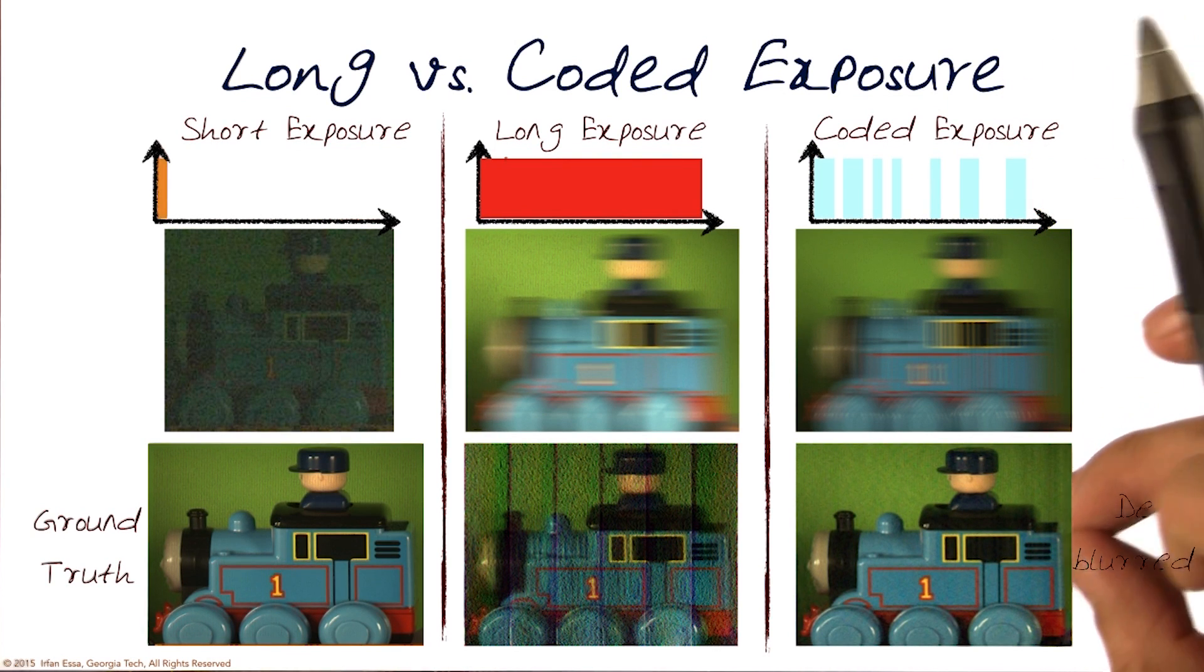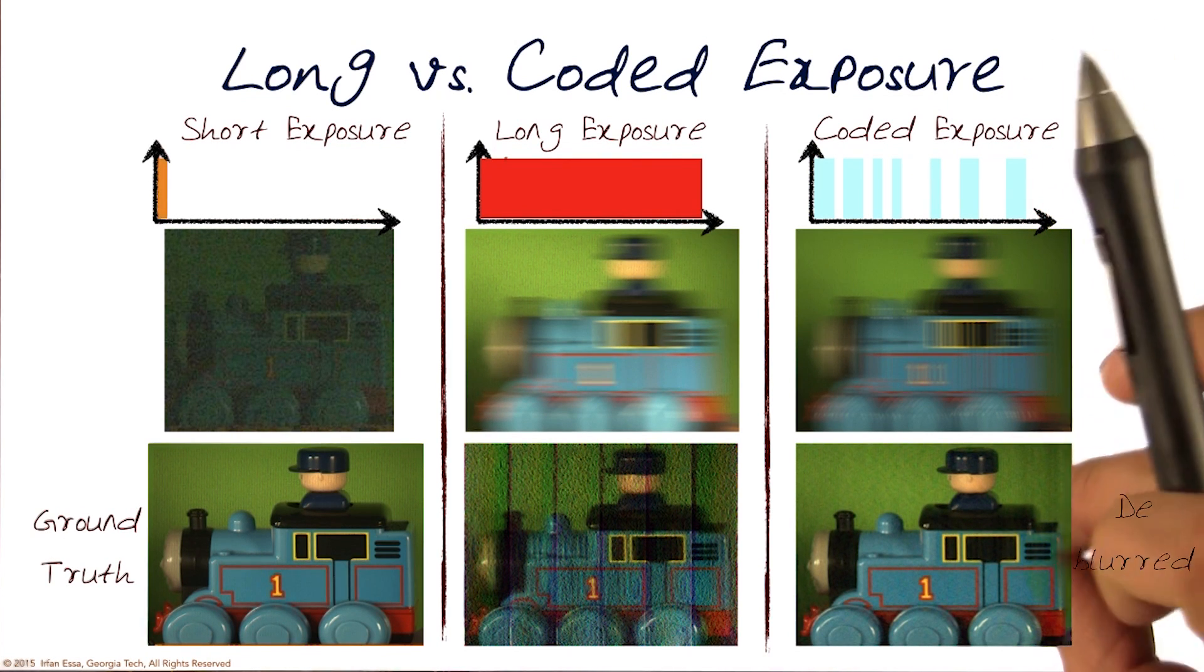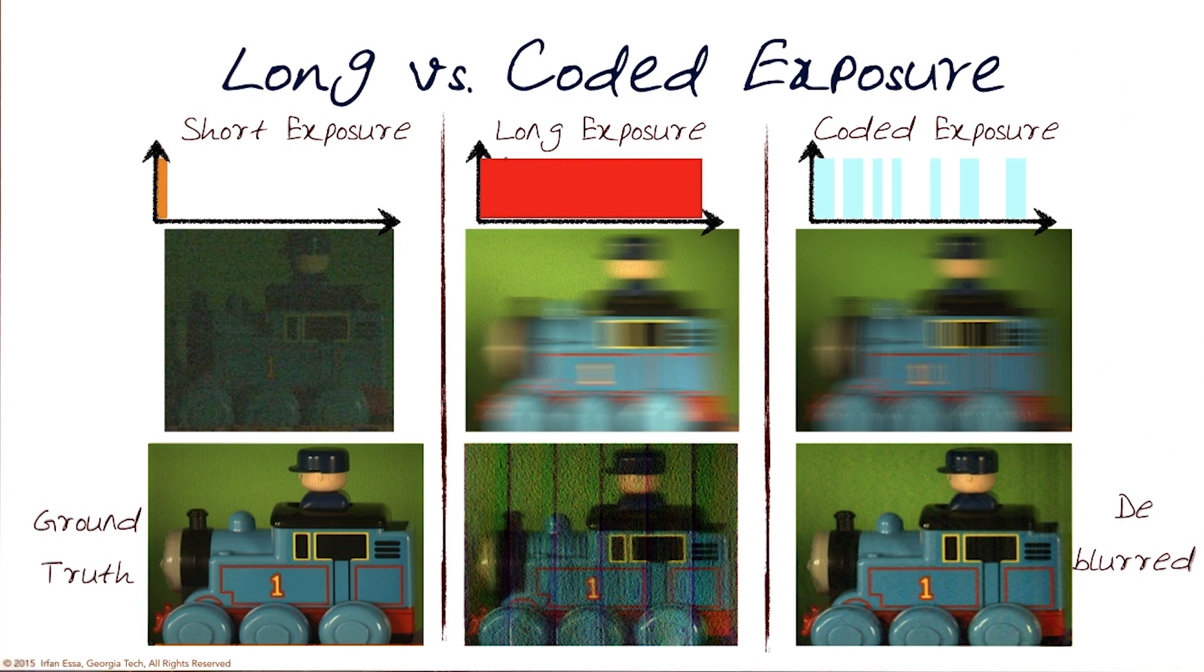We know the code. We know the output. We can de-convolve with the knowledge itself to help us figure out how to actually generate a reconstruction that's much more true to what the original image would be. Same idea as what we looked at for coded aperture, except this time it's a coded shutter.